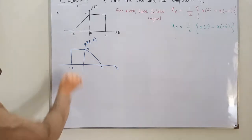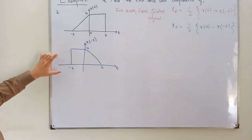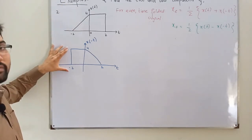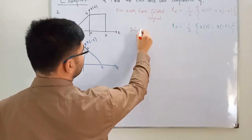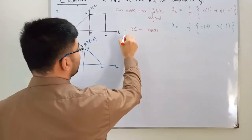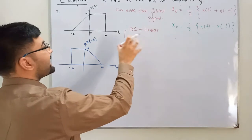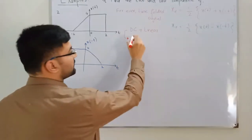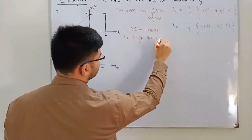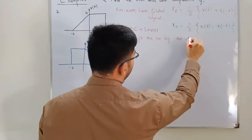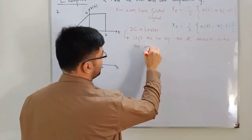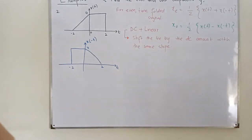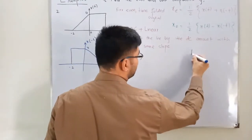We now add x(t) and x(-t) stepwise. From negative 2 to 0, we have a linear function added to a DC value. To add a DC plus a linear function, you shift the line upward by the DC amount while keeping the same slope.